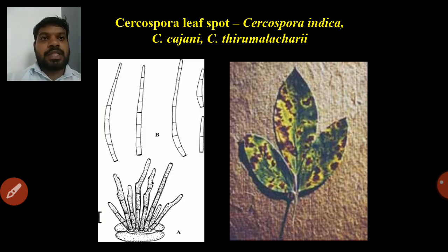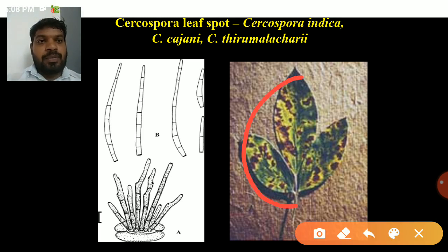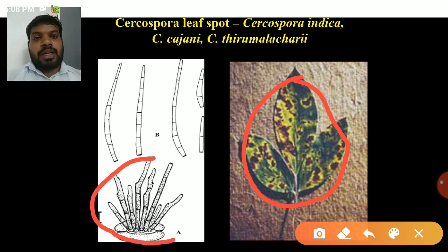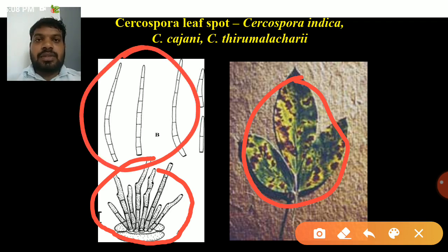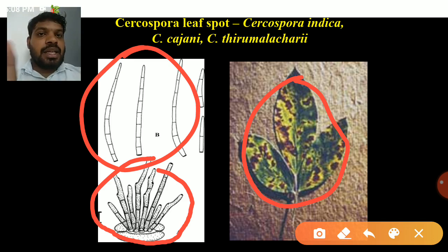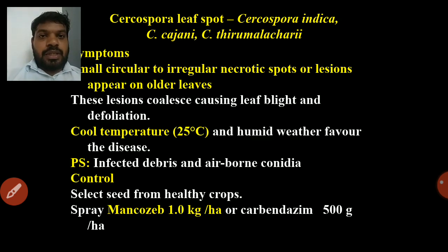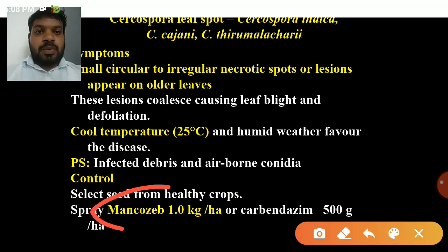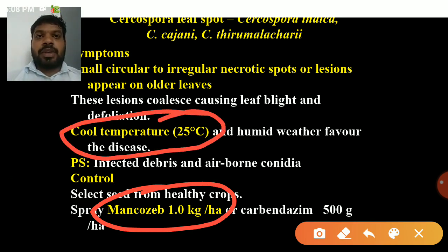Next is Cercospora leaf spot caused by Cercospora indica. It produces necrotic lesions with a yellow halo. The conidiophore is unbranched and produces straight or curved conidia. Cercospora conidia are multi-septate and hyaline — most Cercospora spores are hyaline and thread-like. Spray mancozeb at 1.0 kg per hectare. A temperature of 25 degrees Celsius is favorable for Cercospora leaf spot development.